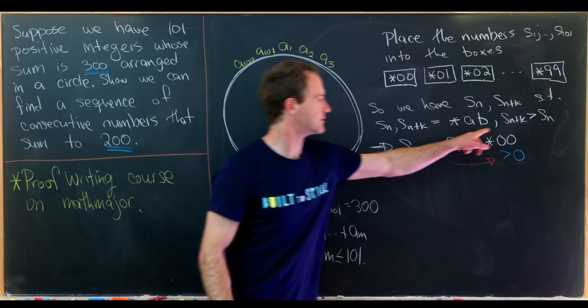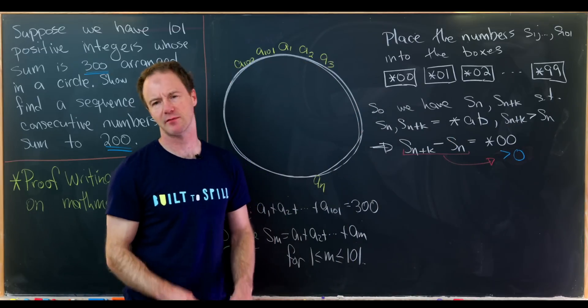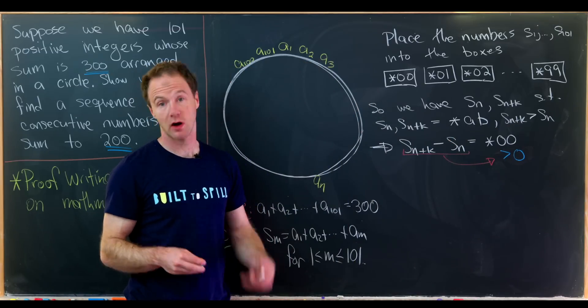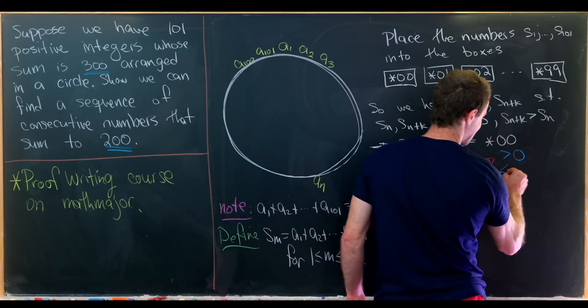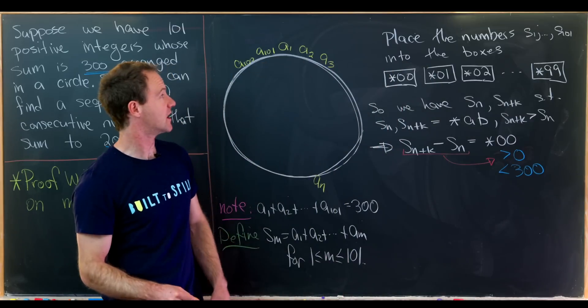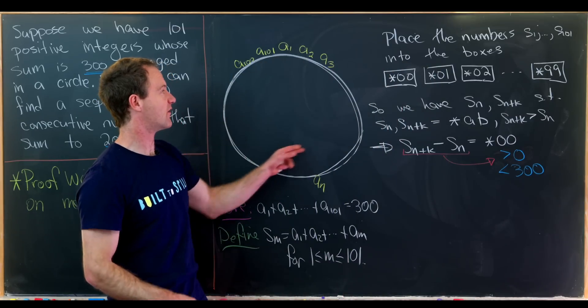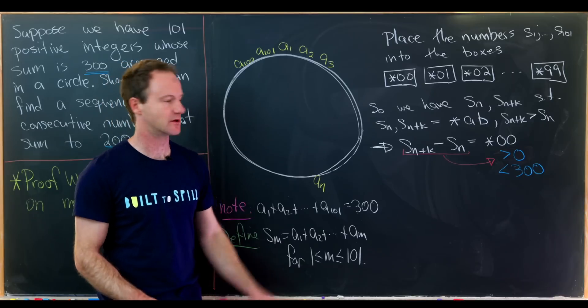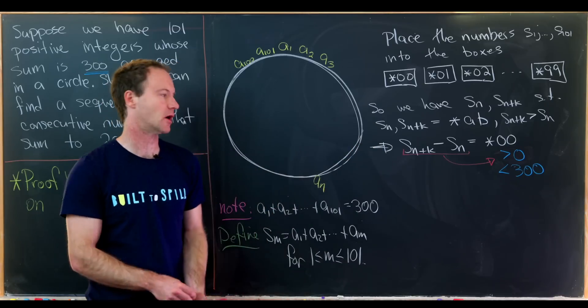We know that because s sub n plus k is bigger than s sub n by our previous argument. But then it's also less than 300. We know that it's for sure less than 300 because the sum of all of the numbers equals 300, but this is the sum of less than all of them.